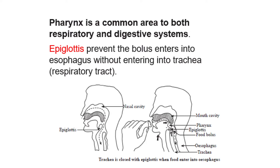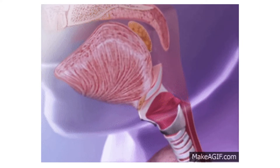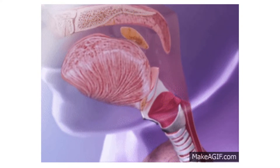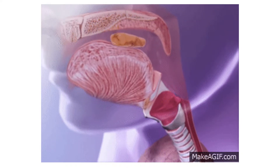The pharynx is a common area shared by both the respiratory and digestive systems, so there is a possibility of food entering the respiratory tract. A structure called the epiglottis prevents the bolus from entering the trachea. As you can see in this video clip, once we swallow food, the epiglottis closes and prevents food from entering the respiratory tract.